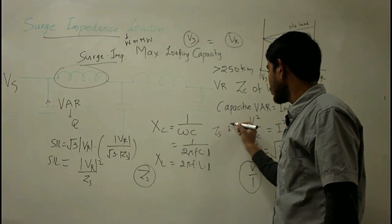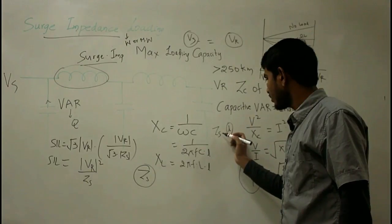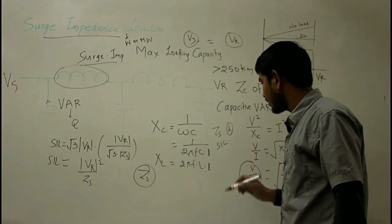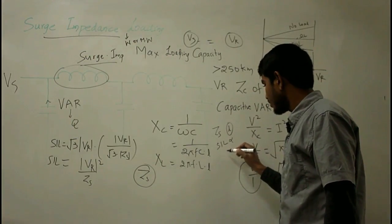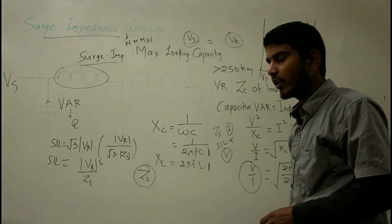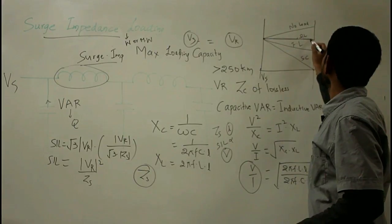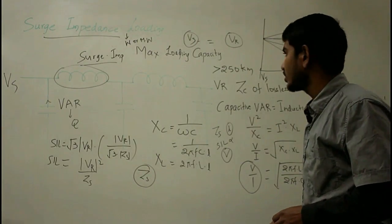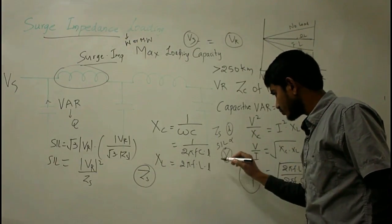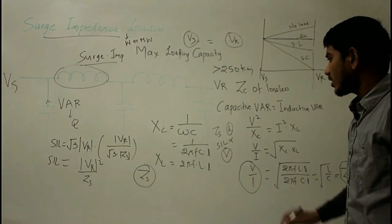Since surge impedance is independent of line length, SIL is also independent of line length. Hence the voltage is the same at every point on the line, giving you a flat voltage profile throughout the transmission line. This analysis applies to the uncompensated line.